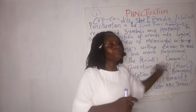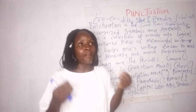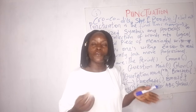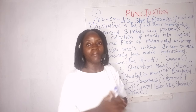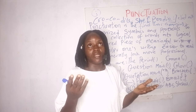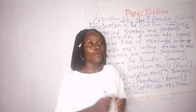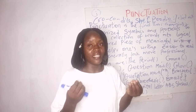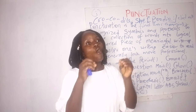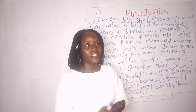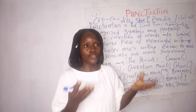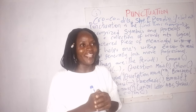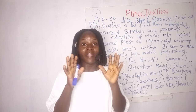Now let's go to the comma. Number one: the comma separates items in a list. For instance, 'I'm going to the market to buy mango, apple, and watermelon.' In that sentence you use commas to separate items in the list. Another use of the comma is to show a break or a short pause in a sentence.